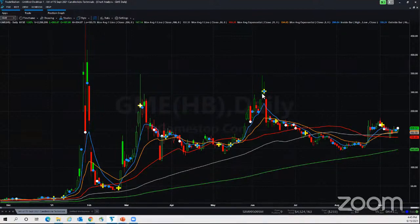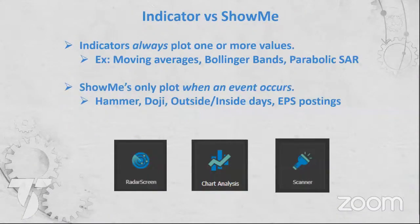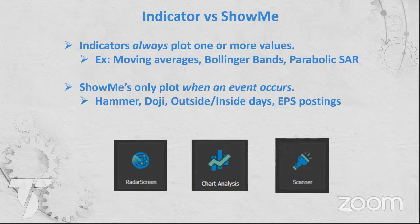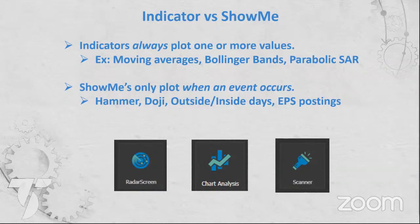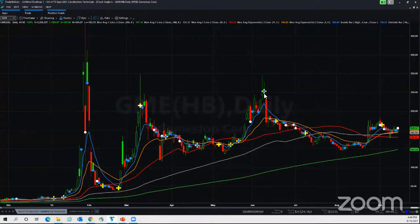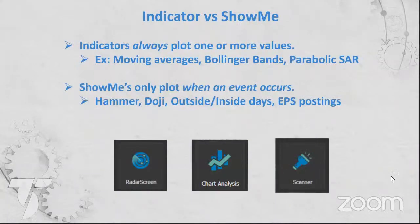In TradeStation we use indicators and Show Me's. An indicator always shows a value on every bar — like the 50-day moving average, Bollinger Bands, or Parabolic SAR. Show Me's only plot when an event occurs, like a hammer, doji, or inside/outside day. The yellow doji marker only appears when a doji occurs. We'll be using these for radar screen chart analysis and scanner.